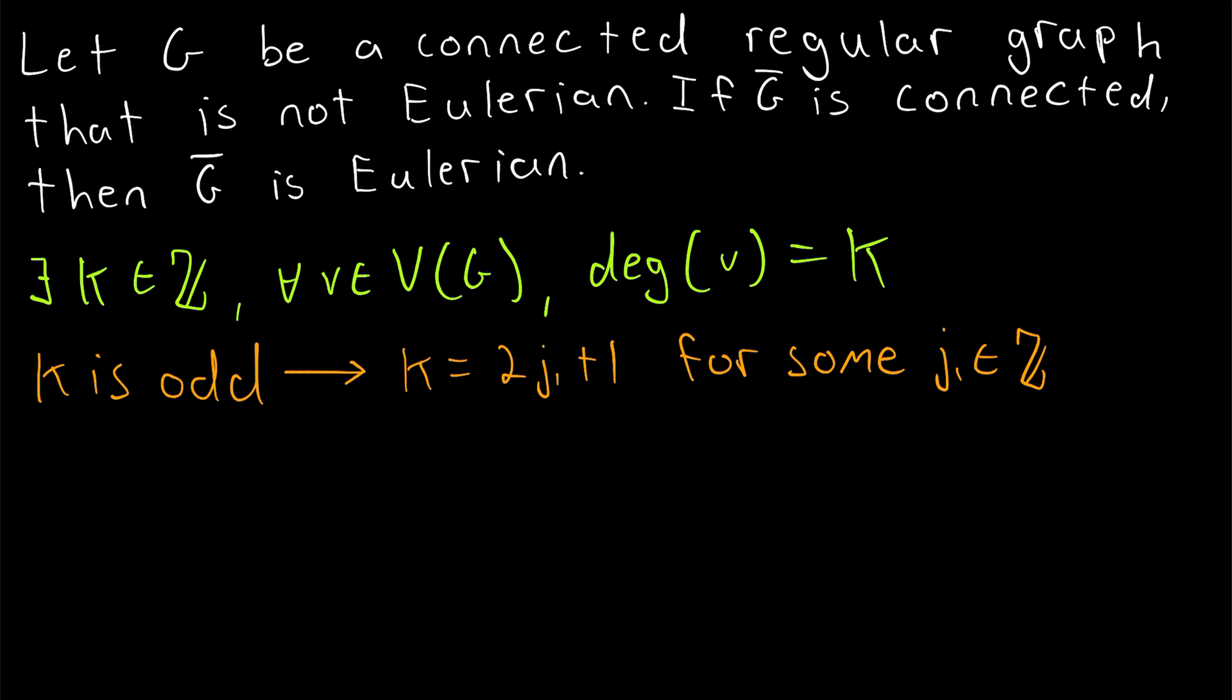Now, we'll show that every vertex of the complement of G, assuming it's connected, every vertex has an even degree. And thus, G complement is Eulerian. So we're going to assume that the complement of our graph G, G complement, is connected.